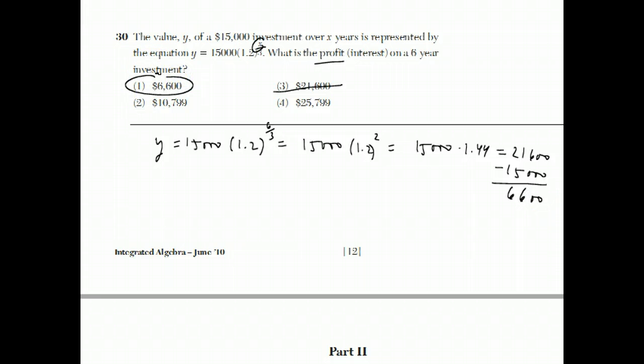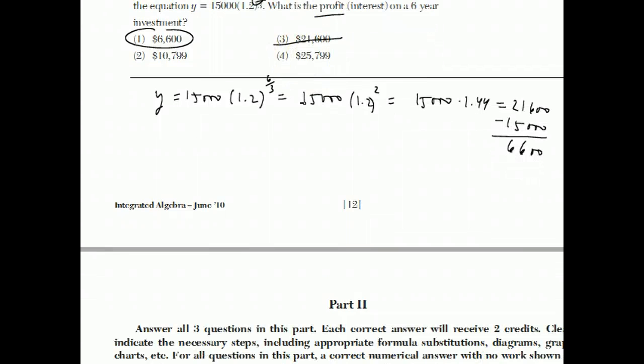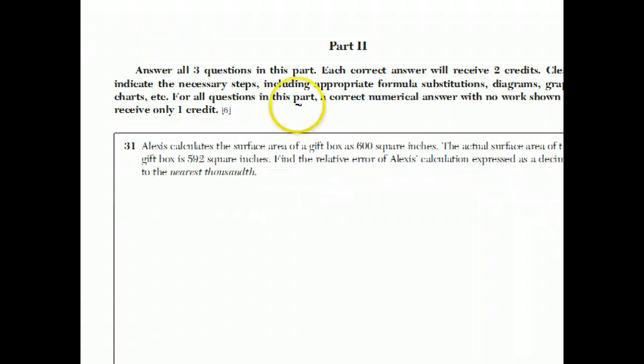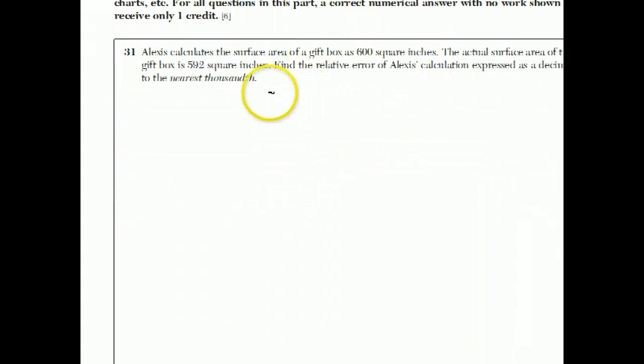So we have to subtract away the 15,000 to get 6,600. That's why the answer is choice 1. You've got to be careful on multiple choice, since they don't give any part credit on those. Okay, let's move on to part 2. There's three questions in part 2. And let's see what these are like.